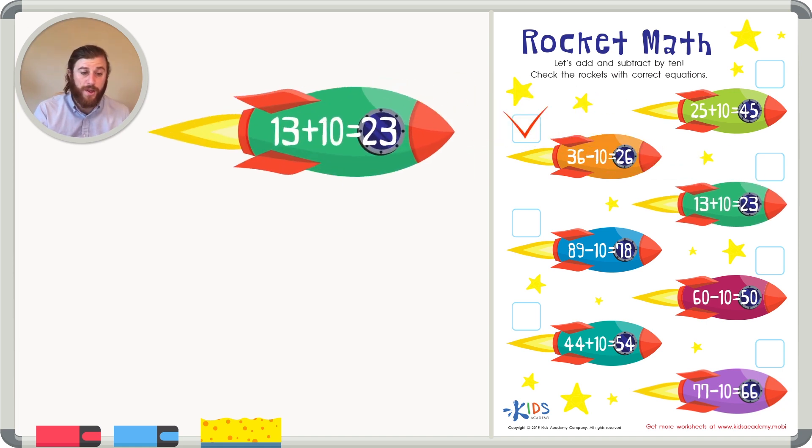Let's take a look at the next one. 13 plus 10. This rocket has a sum of 23. Let's go ahead and check that. 3 plus 0, remember anything plus 0, the number stays the same. We have a 3 again.